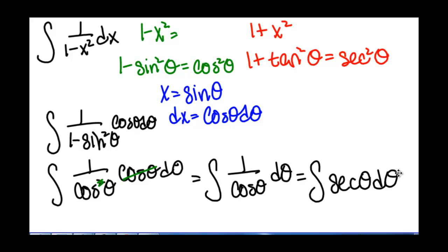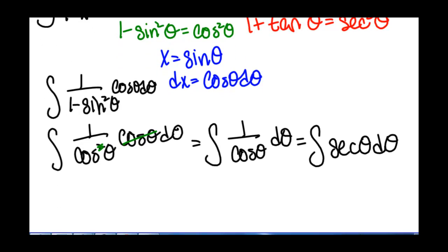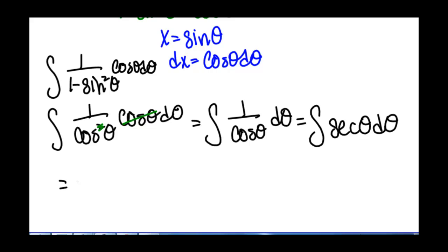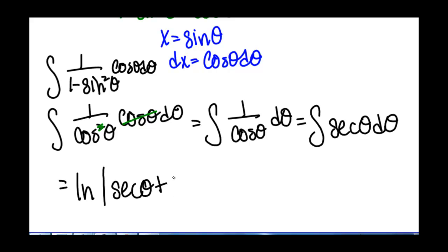If you remember what the integral of secant of theta is, that is the natural log of the absolute value of secant of theta plus tangent of theta, plus our constant. If you did not remember that, you could of course derive it using trigonometric integrals.